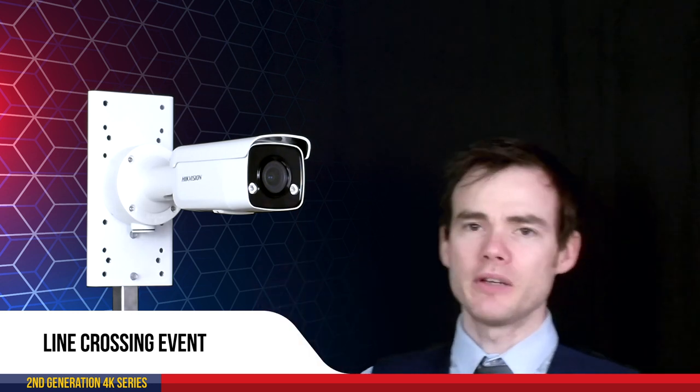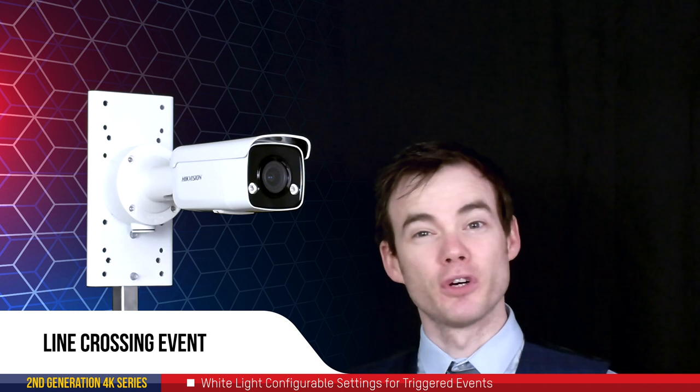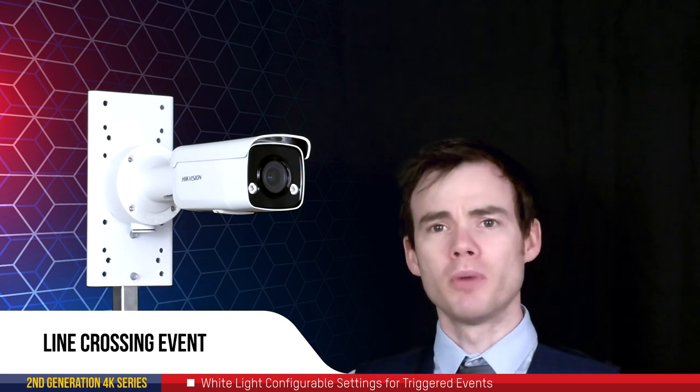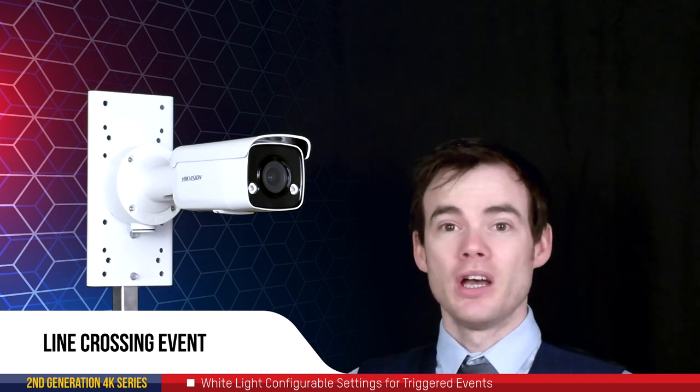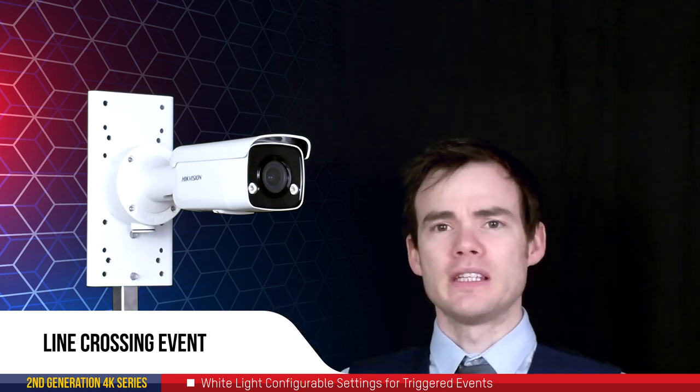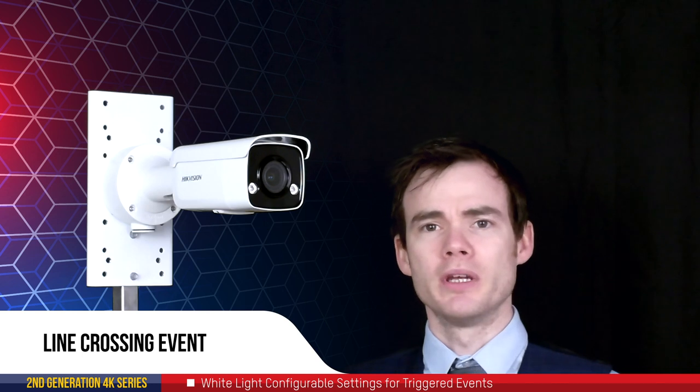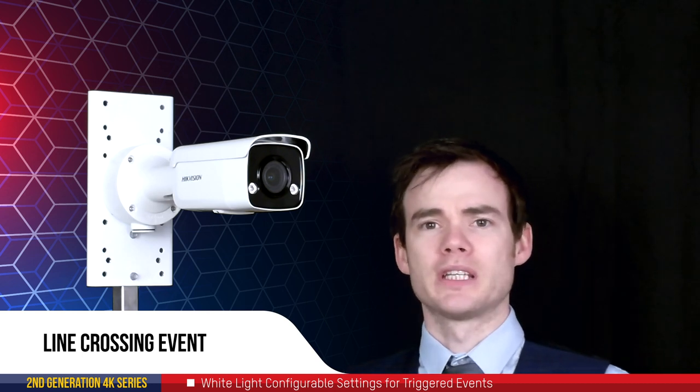Now as I mentioned earlier as well, the white lights on there can also have a secondary function meaning they can be set to come on upon an event being triggered such as a line crossing, intrusion detection, motion detection, and also we can configure these events to trigger only for human and or vehicles depending on whatever you configure them for.